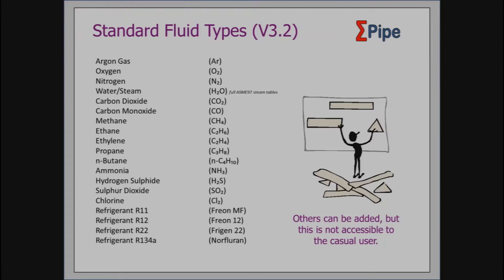What it is doing is combining the three-dimensionality of objects with this type of calculation. The list is limited, but it is growing. In fact, one of these — liquid chlorine — was added a few months back because a user requested it. That's doable in future of course. If you need something, let me know and I'll put it in.